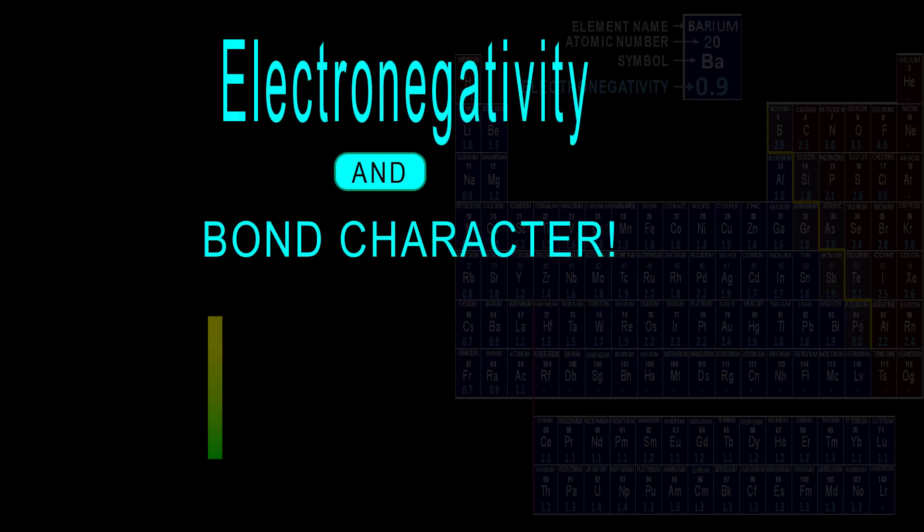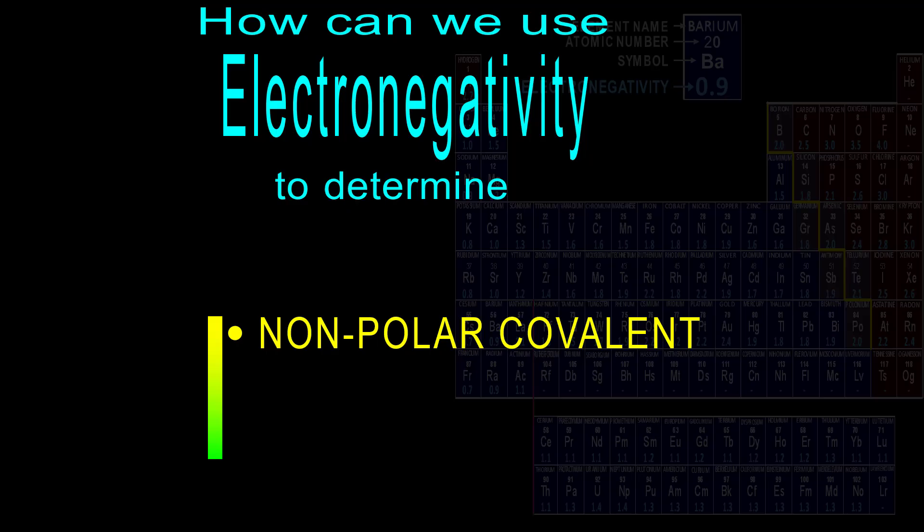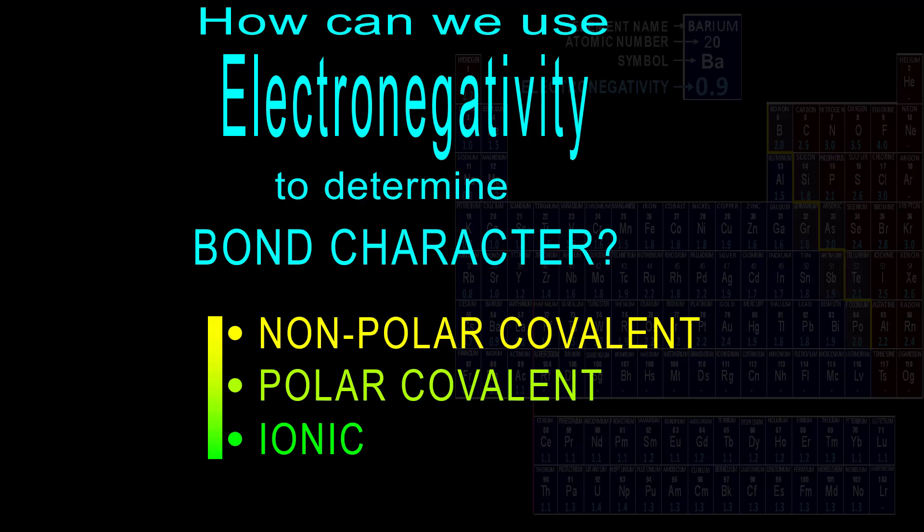Welcome to Electronegativity and Bond Character, in which we will explore how we can use electronegativity to determine whether a bond is nonpolar covalent, polar covalent, or ionic, otherwise known as bond character or bond type.